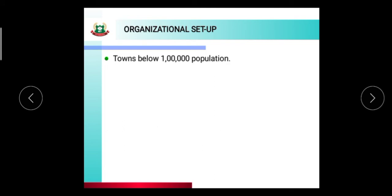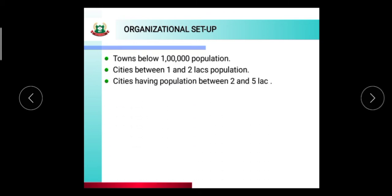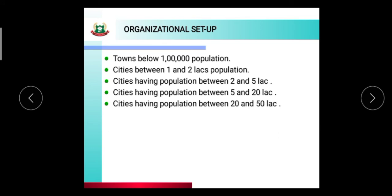The organizational setup is structured based on population: towns below 1 lakh population, cities between 1 to 2 lakhs, cities between 2 to 5 lakhs, cities between 5 to 20 lakhs, cities between 20 to 50 lakhs, and cities above 50 lakhs. This complete organizational setup assigns responsibility according to population size.